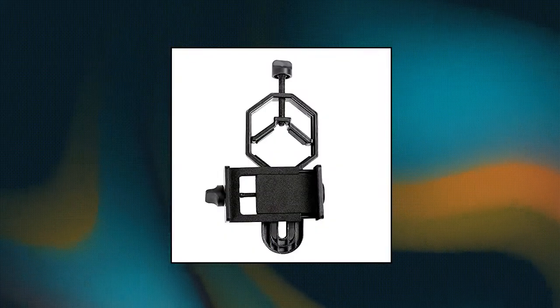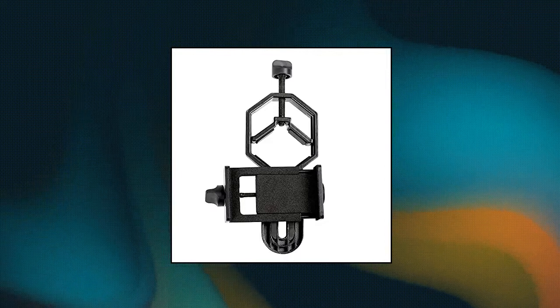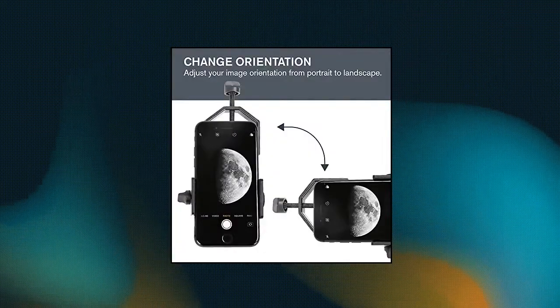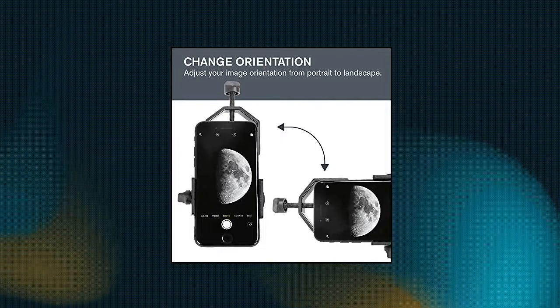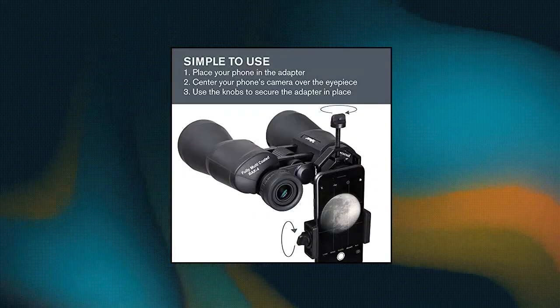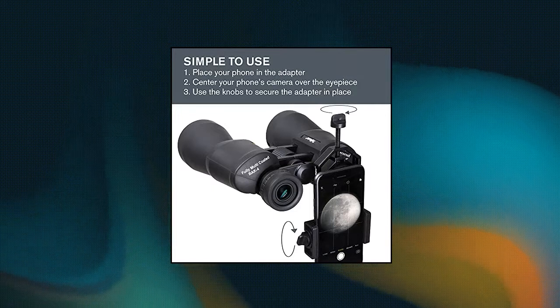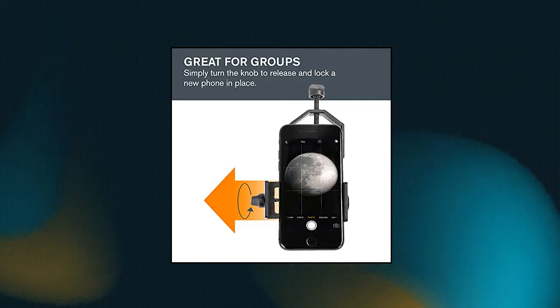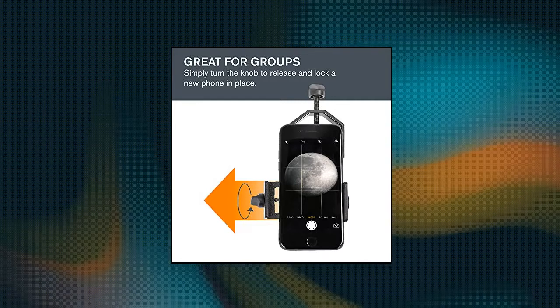Celestron Basic Smartphone Adapter - This smartphone adapter connects your smartphone to a telescope, binocular, spotting scope, or microscope, so you can capture images and video through the eyepiece. Works with most smartphone devices, compatible with most telescope eyepieces and any eyepiece with an outside diameter measuring from 29mm to 45mm. Simple to use.